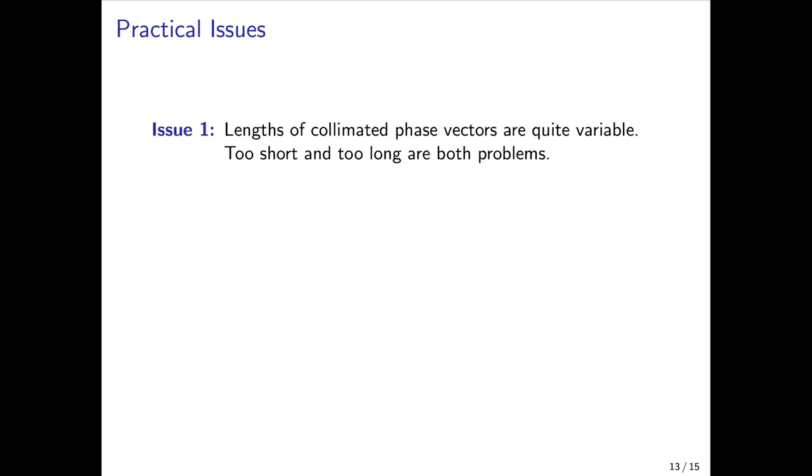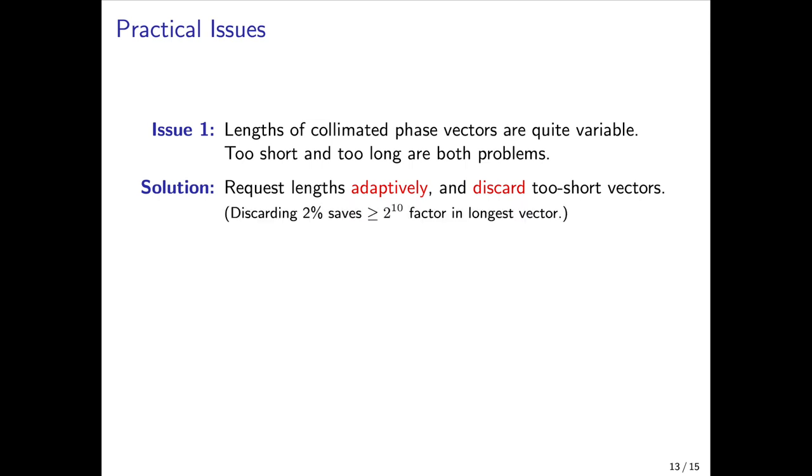This completes all the main ideas behind the collimation sieve. But in our classical simulations of the algorithm we uncovered a number of practical issues that we didn't anticipate. The first is that when we perform collimation of two phase vectors the length of the resulting phase vector can be quite variable and unpredictable. If it's longer than expected it requires too much classical memory to store. If it's shorter than expected this is an even bigger problem because it has to be collimated with a correspondingly longer phase vector. Our solution to this is to tweak the collimation sieve so that each stage can request a desired phase vector length adaptively, and if the return vector is much shorter than expected, to simply discard it and recompute a fresh one from scratch. Empirically we find that discarding about the two percent shortest phase vectors saves us a factor of more than a thousand in the length of the longest vector we need to successfully complete the sieve.